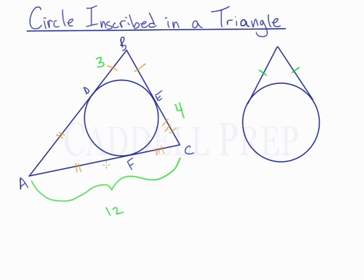We could find a lot of these other ones. If DB is 3, that means BE is 3. So this whole length is 7.